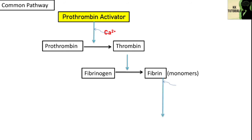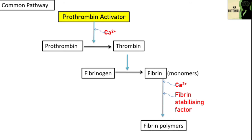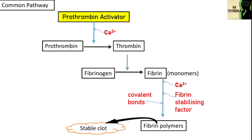In the presence of calcium ions and fibrin stabilizing factor — which is factor 13 — it acts on the fibrin monomers and converts them into fibrin polymers by formation of covalent bonds. Eventually, they lead to the formation of a clot by attracting phospholipids, platelets, and other substances that adhere to them, forming a stable clot.